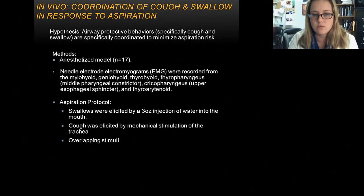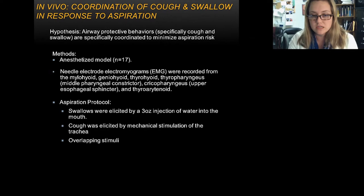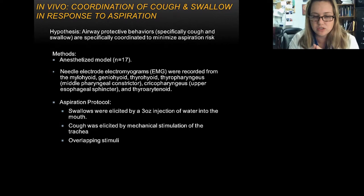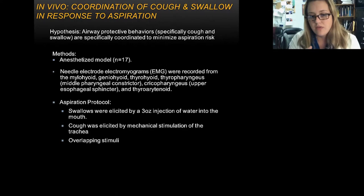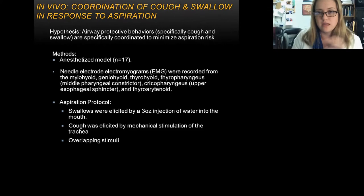We have an anesthetized model with 17 animals. We did direct needle EMG into muscles working on all parts of the swallow: laryngeal elevator muscles, the muscle that closes the vocal folds, pharyngeal muscles that control bolus movement and the bottom of the pharynx, and muscles that open the upper esophageal sphincter. We then devised an aspiration protocol where we looked at cough and swallow in isolation, then stimulated cough mechanically. Once three coughs were produced, we injected water in the mouth and observed how cough and swallow were coordinated over time.